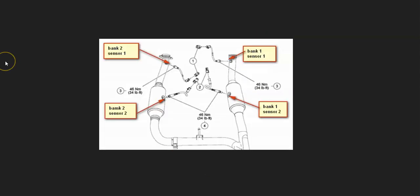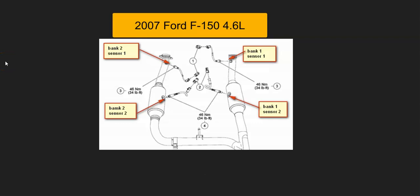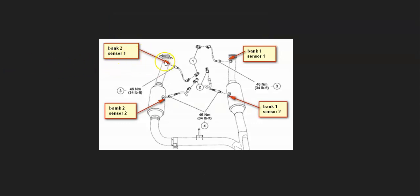The first thing to do is locate that upstream oxygen sensor on bank two. It's going to be called sensor one and it's going to be located before the catalytic converter. The one located after the catalytic converter is called sensor two or the downstream oxygen sensor. But the one the onboard computer is having a problem with is bank two sensor one or upstream oxygen sensor.